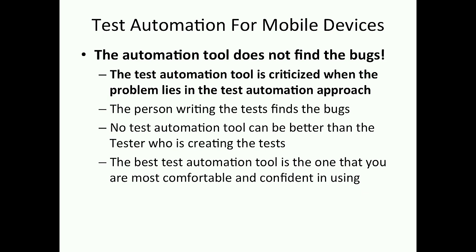Things to remember: the automation tool itself does not find the bugs. Test automation is often criticized when it's really the approach — the tool itself isn't there to be criticized. It's often the approach, the philosophy, the creativity, the coding itself. The person writing the test is the one that finds the bugs. No test automation tool can be better than the tester who's creating the test.